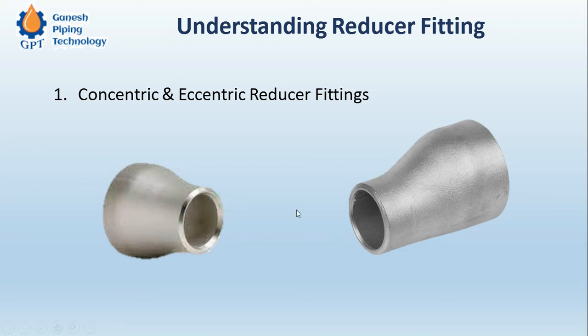From the name itself you can find out that in a concentric reducer, the axis of the larger and smaller diameter is the same — the centers are collinear. Whereas in the case of an eccentric reducer, the major diameter and the minor diameter axes are offset to each other. This is the basic difference between the two types.